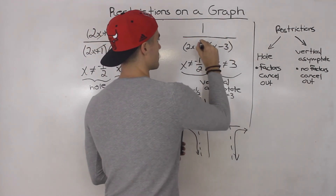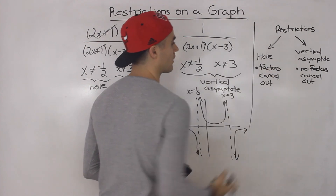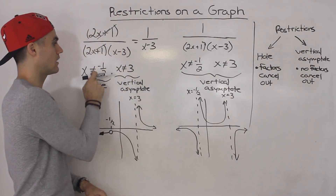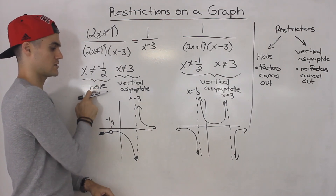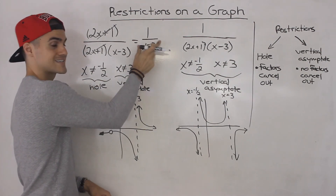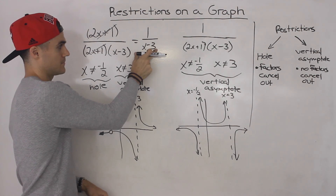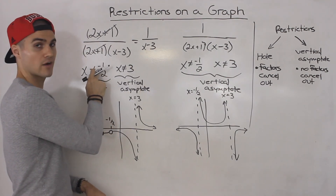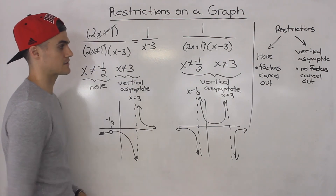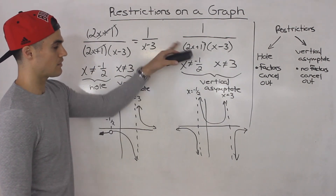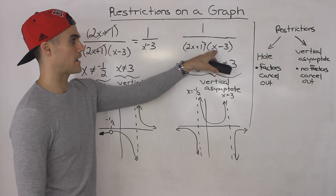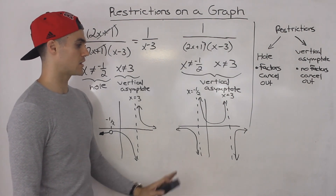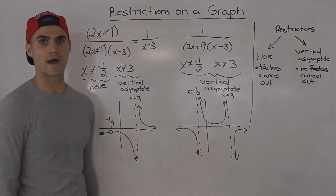Basically, restrictions can either be a hole or a vertical asymptote. If factors cancel out and they're fully gone, then that restriction is going to be a hole — you would just graph the simplified expression and put a hole at whatever x value canceled out. But if nothing cancels out, then the remaining restrictions in the denominator are always going to be vertical asymptotes.